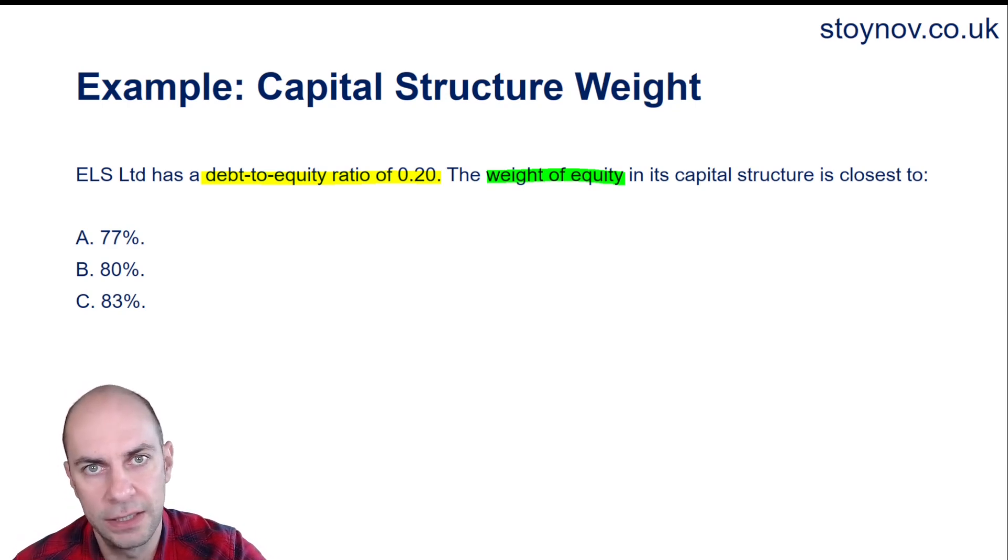Let's attack the elephant in the room here. This is not the actual weight of debt. So if you're just thinking, well, 1 minus 0.2 is 80%, and that's an option here, unfortunately, it's not going to be that easy. In fact, we can already rule out 80% because that's clearly going to be a distractor.